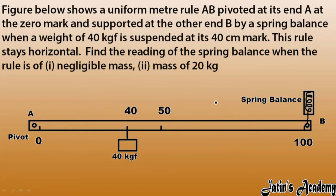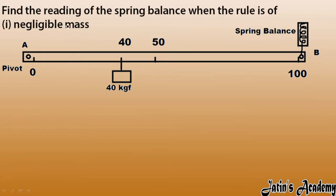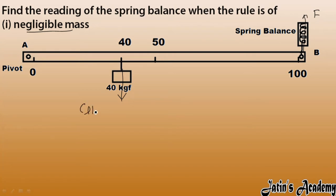In the first case we consider the mass of this rule as negligible, so we will not consider the weight of the rule itself. The 40 kgf is acting in the downward direction and the spring balance force — I'm considering it as F — is acting in the upward direction. Since the rule is in the horizontal condition, clockwise moment equals anticlockwise moment.